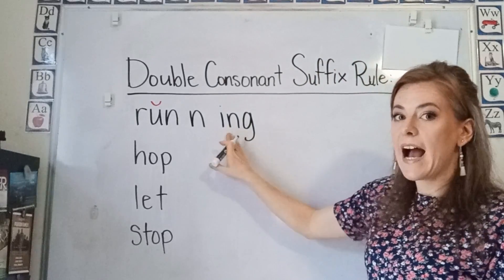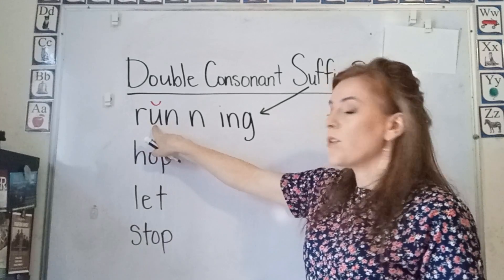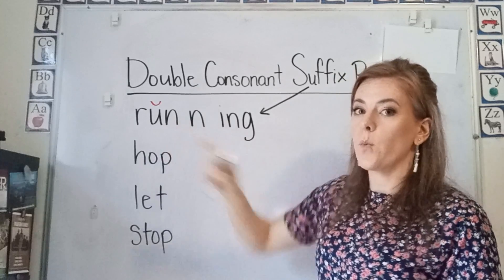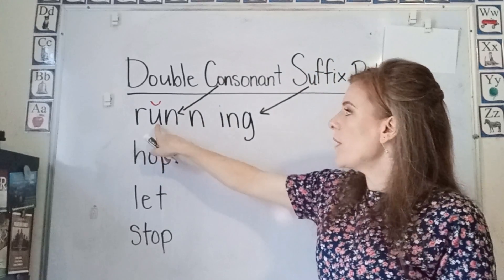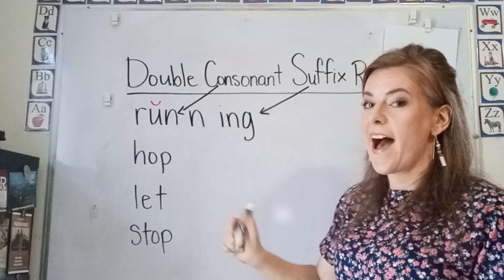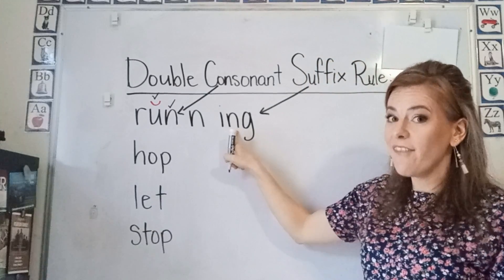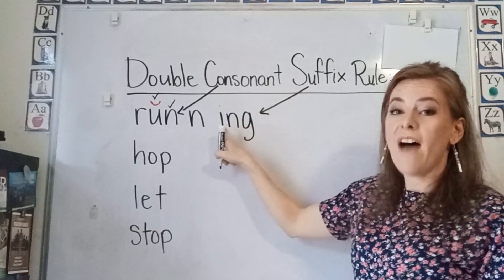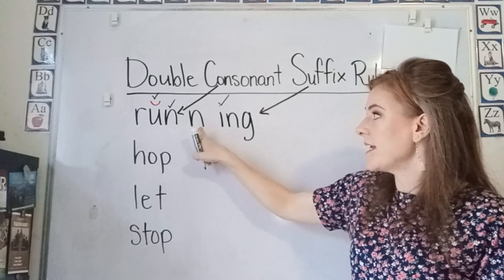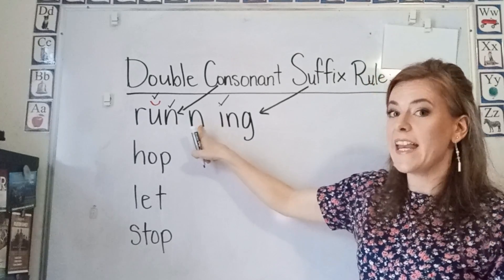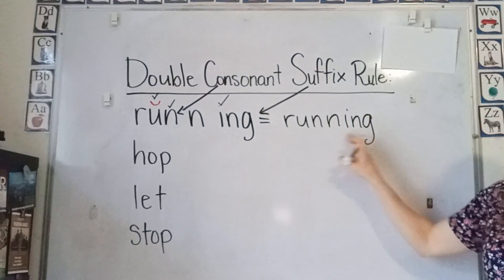So here is our suffix. Here we have our root word, and it says run. Now, at the end of this word, we only have one consonant, which is the N, and we have a short vowel. So since we have a short vowel, we have one consonant, and our suffix starts with a vowel, we double our consonant and make another N. So this word would be running.